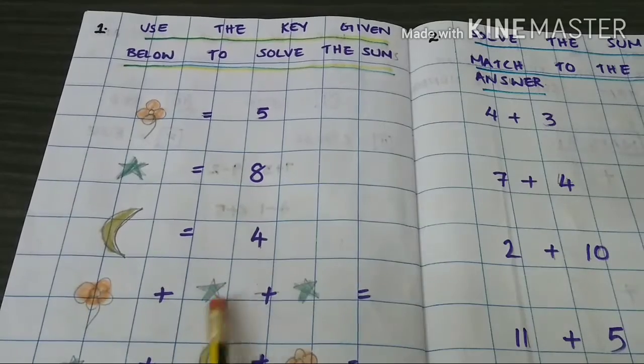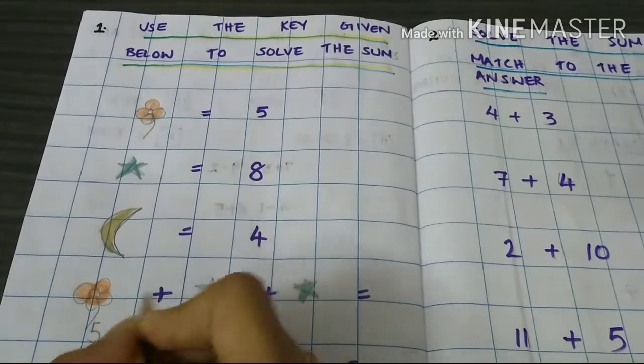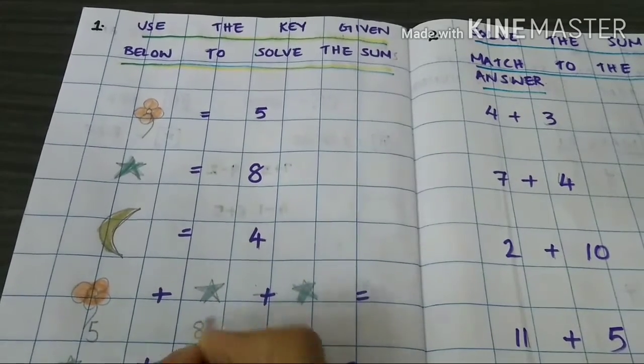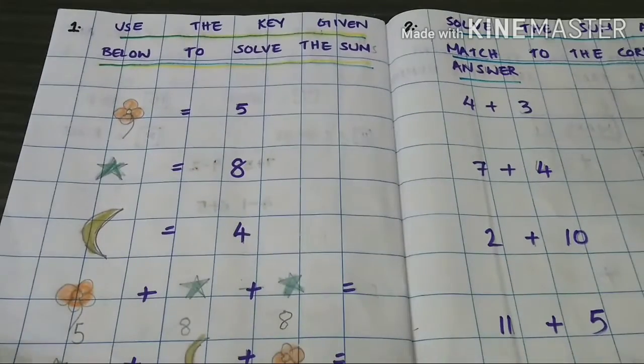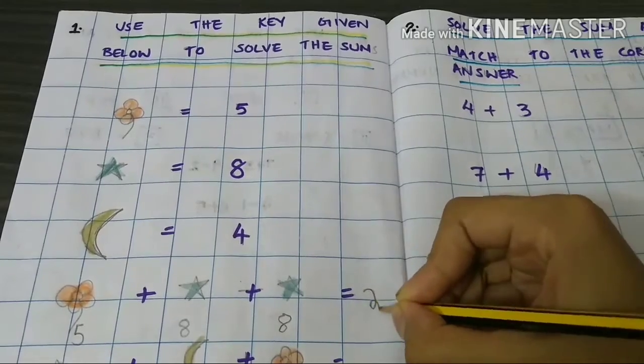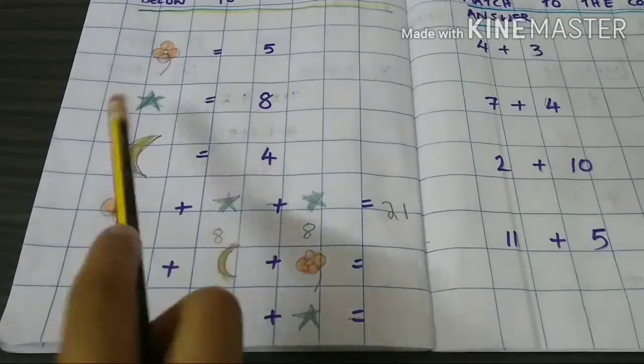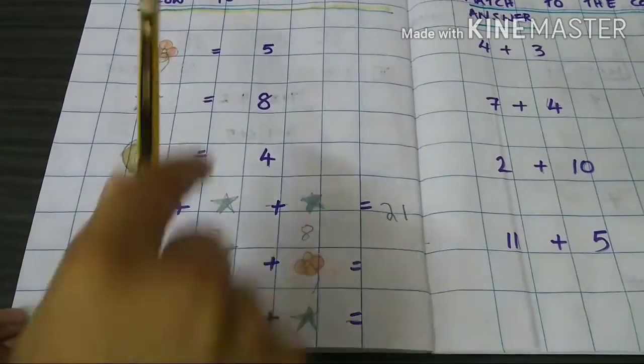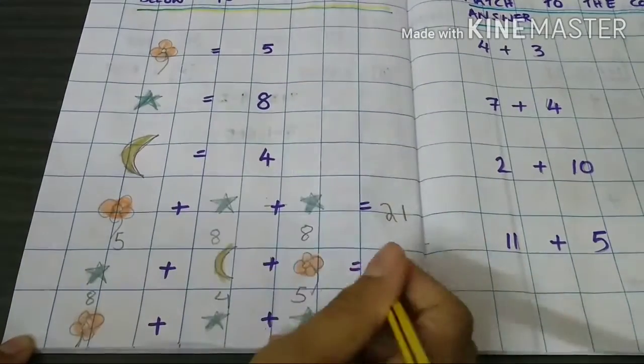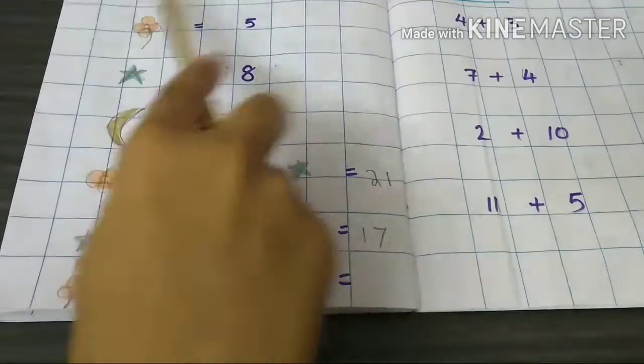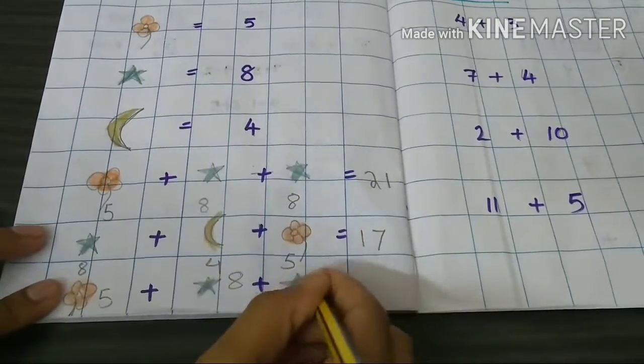So flower plus star plus star. Flower equal to 5, star equal to 8, and star again equal to 8. So 21 is equal to 8.